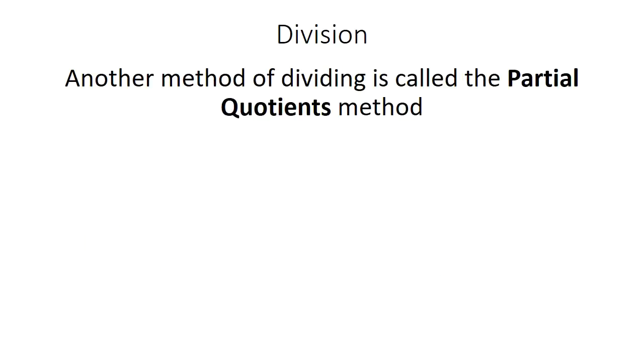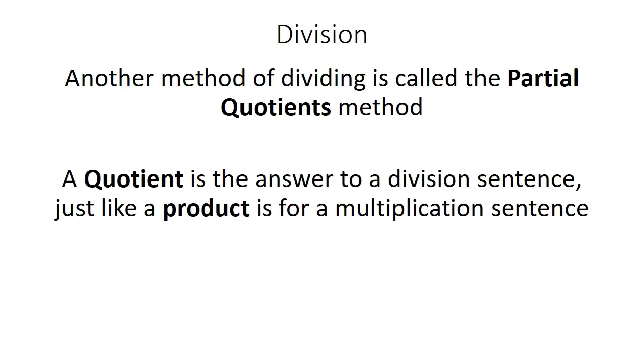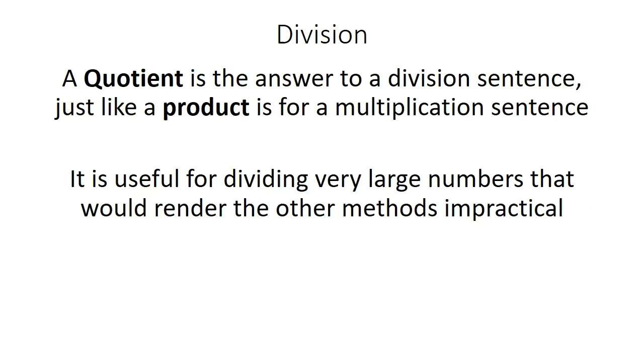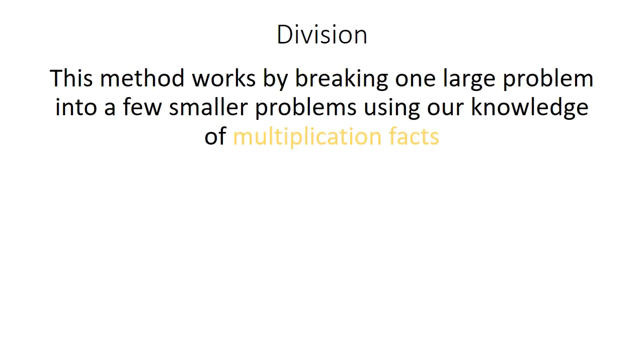Today we're going to talk about one more method of dividing, called the partial quotients method. A quotient is the answer to a division sentence, just like the product is for a multiplication sentence. This method is useful for dividing very large numbers that render other methods impractical. The partial quotients method functions by breaking down one large problem into a few smaller problems using our knowledge of multiplication facts.